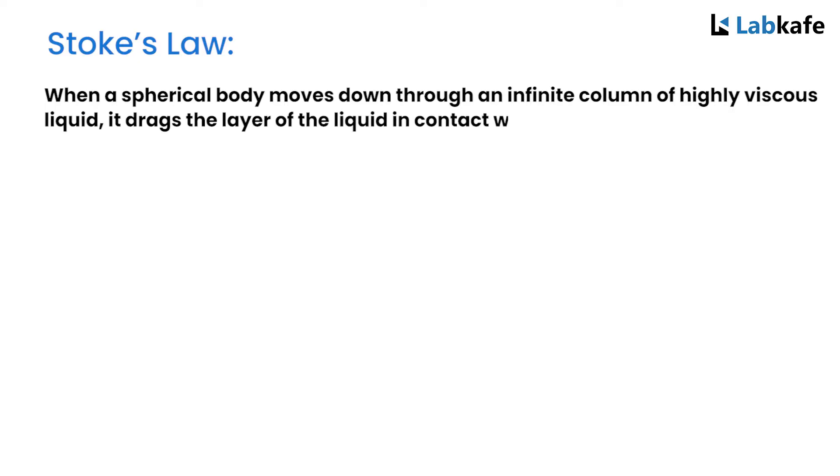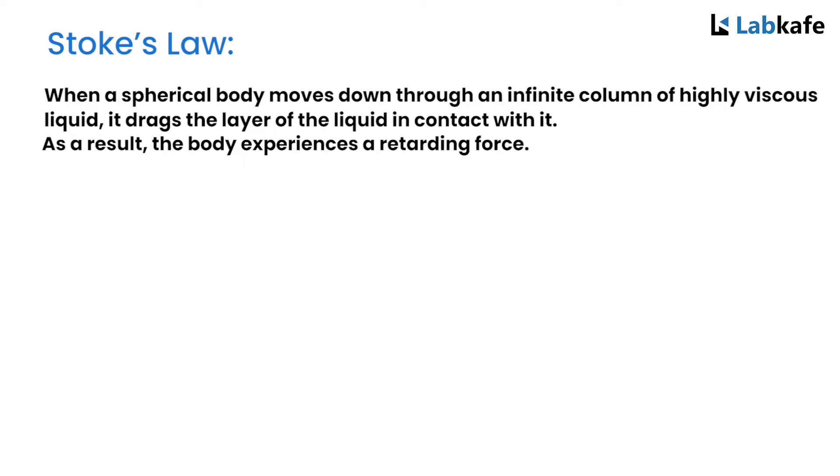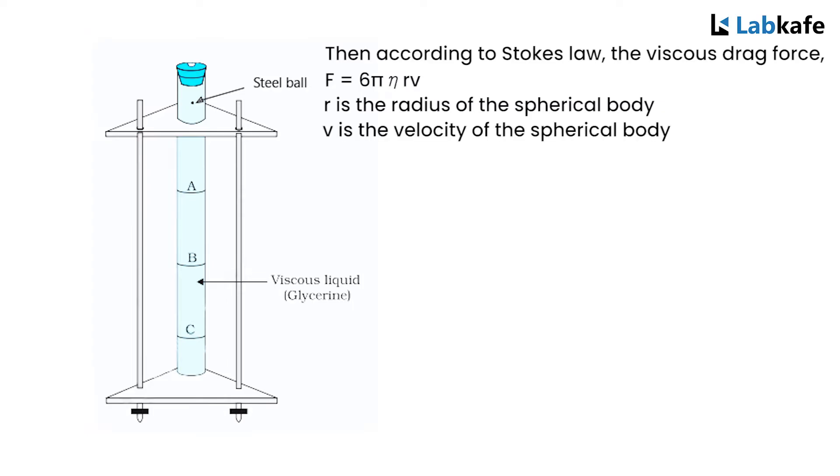Stokes law: When a spherical body moves down through an infinite column of highly viscous liquid, it drags the layer of liquid in contact with it. As a result, the body experiences a retarding force. Then according to Stokes law, the viscous drag force F equals 6 pi eta rv, where r is the radius of the spherical body and v is the velocity of the spherical body.